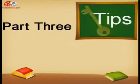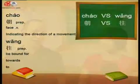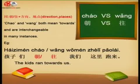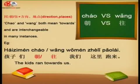Now for today's vocabulary tip: we're going to compare the words 朝 and 往. They're pretty much the same word, with a slight difference. First, let's look at how they're interchangeable. For example: 孩子们朝我们这里跑来 — The kids ran towards us. And if you use 往: 孩子们往我们这里跑来 — again, the kids ran towards us. No difference in meaning there — both mean 'towards.'